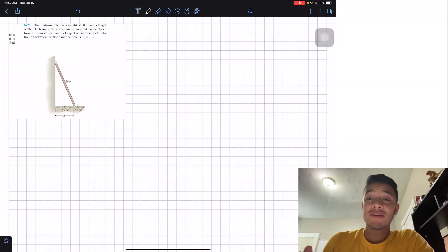Welcome back everyone to learning by teaching statics, and today we're going to do problem 825. The uniform pole has a weight of 30 pounds and a length of 26 feet. Determine the maximum distance d it can be placed from the smooth wall and not slip. The coefficient of static friction between the floor and the pole is 0.3.